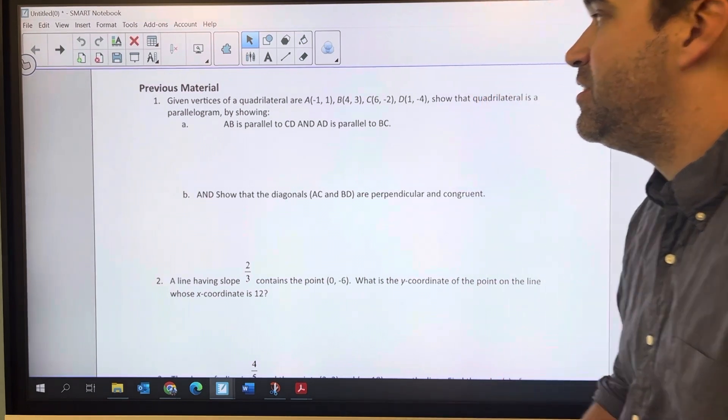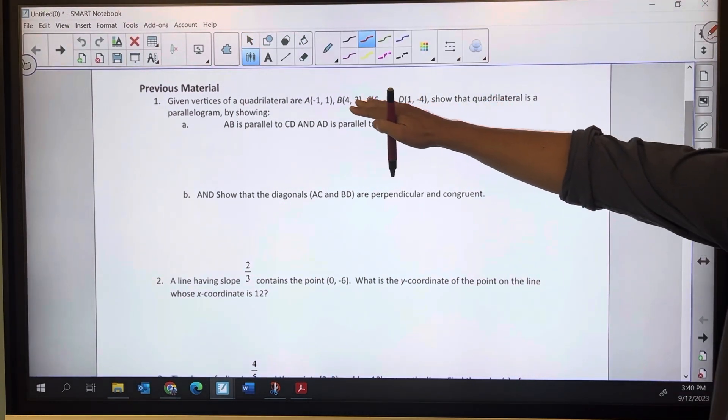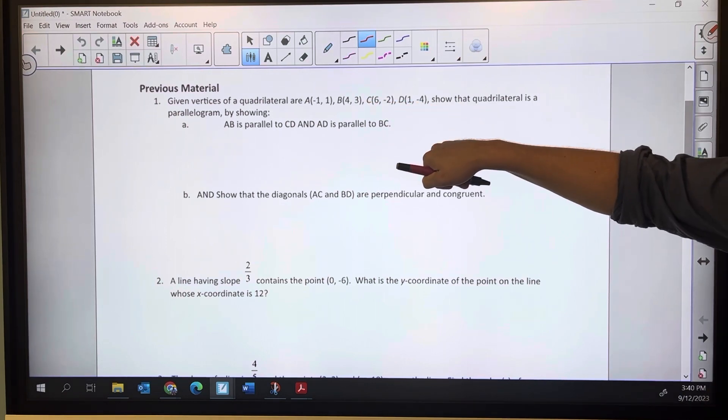So number one actually ends up being quite a bit of work. We're showing that the four points ABCD create a quadrilateral that's a parallelogram.